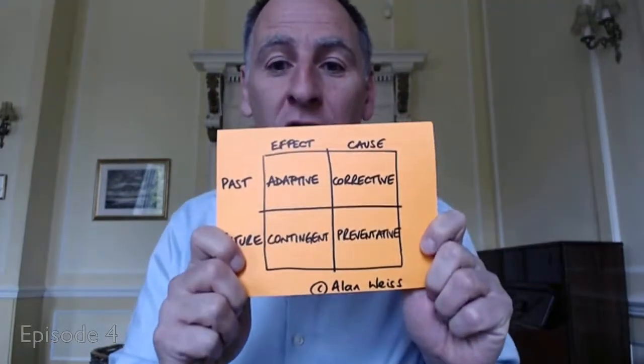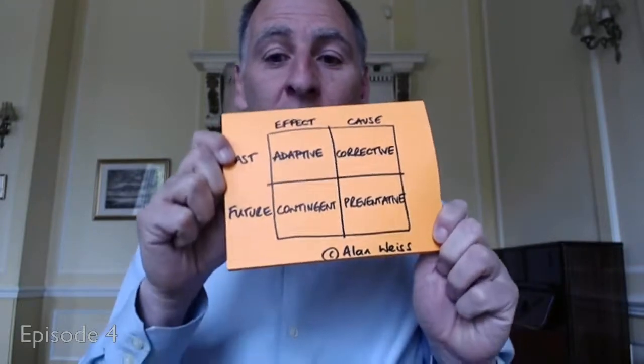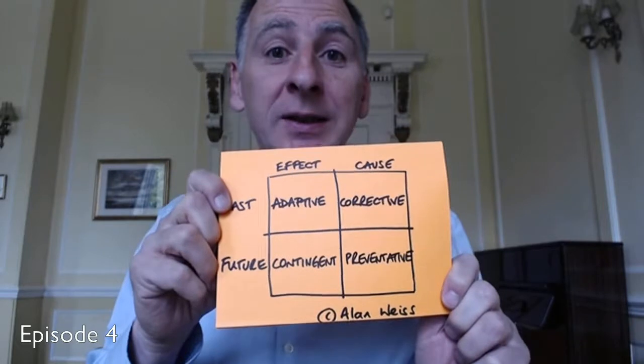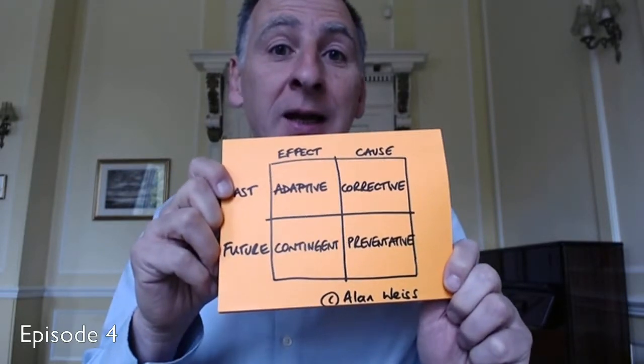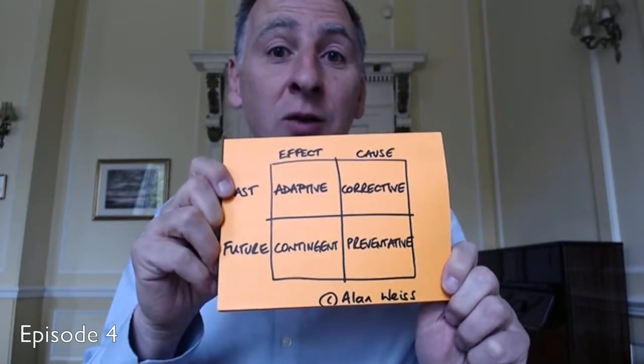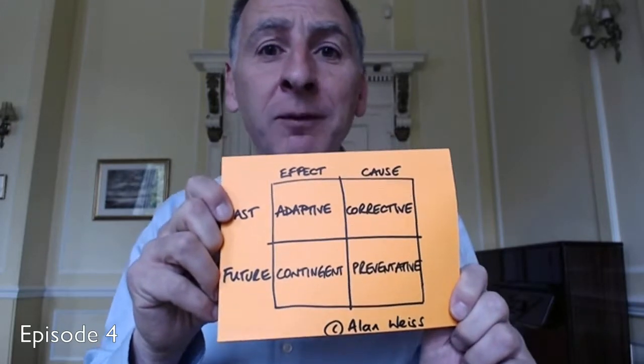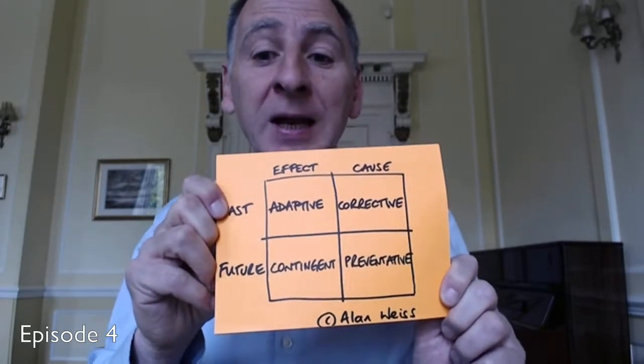Well, hello again and welcome to another edition of Cross Shots. This edition is all about creating better action plans and using a chart to help you do that. Here is the chart, and this chart was given to me by a friend and mentor of mine called Alan Weiss. Alan is a coach, a consultant, and a writer who has written over 50 management books — the man's a genius.